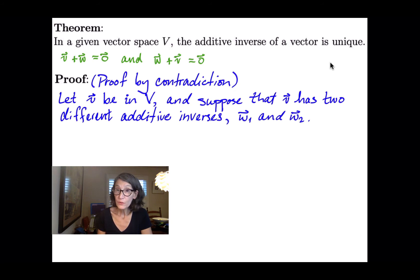We want to prove that v only has one additive inverse. So let's assume the opposite of what we're trying to prove. Let's assume it has more than one. So w1 and w2 are both additive inverses of v. So that means we can say that w1 plus v is the additive identity, and v plus w2 is also the additive identity.